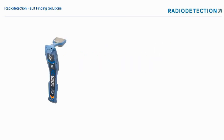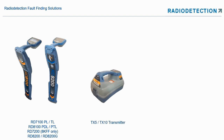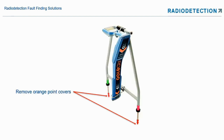We've got our 8200. We can also use a 7100, 8100 PDL, PTL, or 7200 — but only for 8 kHz fault find. One important job when using an airframe: remove the orange point covers. These are little rubber covers that stop the metal points from poking through the bag — they're insulated, so the airframe won't work with them on.